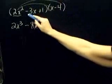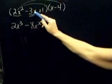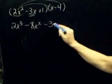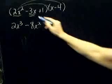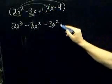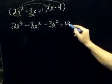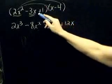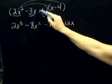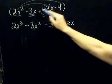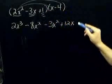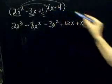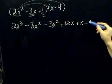Now let's do the negative 3x. Negative 3x times x is negative 3x squared. Negative 3x times negative 4 would be positive 12x. Now let's distribute the positive 1. Positive 1 times x is positive x, and positive 1 times negative 4 is negative 4.